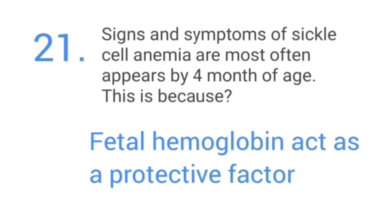Signs and symptoms of sickle cell anemia most often appear by four months of age. This is because fetal hemoglobin acts as a protective factor.